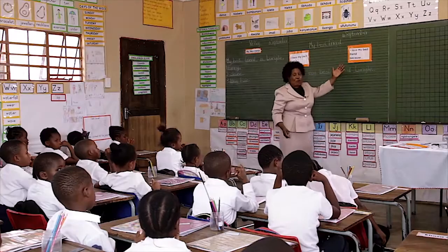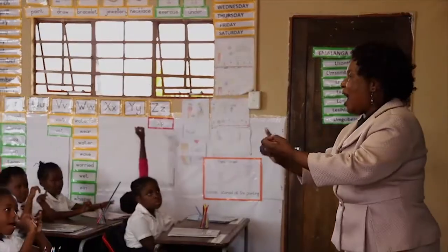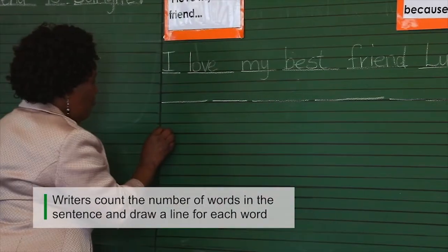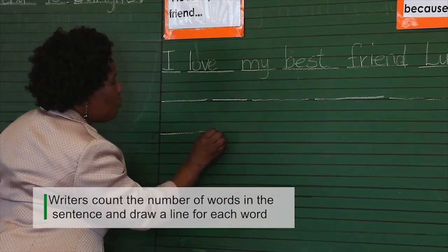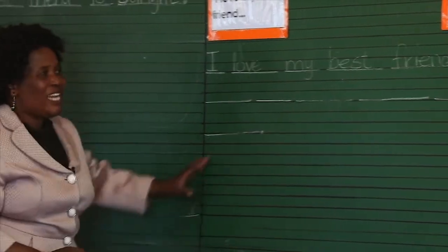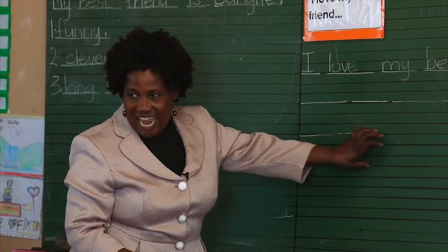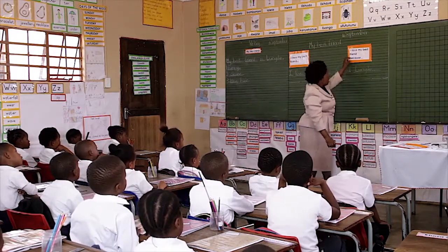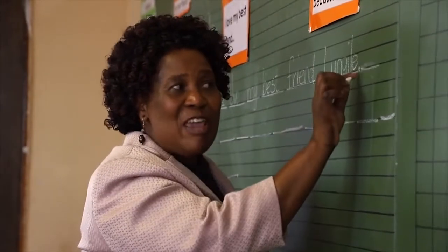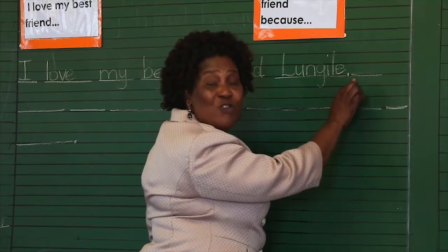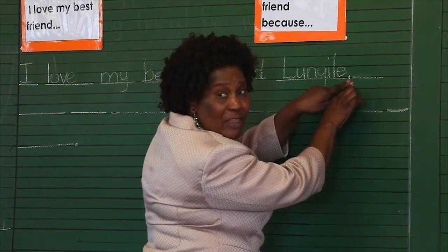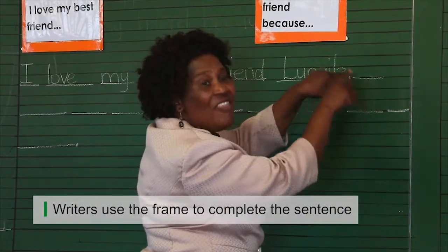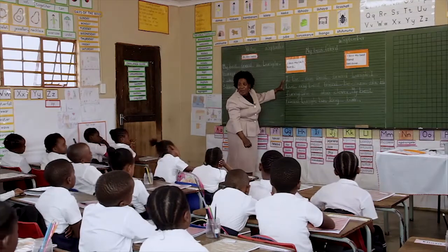Let us count the number of words that we are going to write. I love my best friend. Writers count the number of words in the sentence and draw a line for each word. Then I put a full stop to show that the sentence ends here. Let us write the sentence. I — I begin with a capital letter. Remember, this is a new sentence. You see the full stop here — it shows that sentence number one ends here. The writers use the frame to complete the sentence. You see that it's now a paragraph.